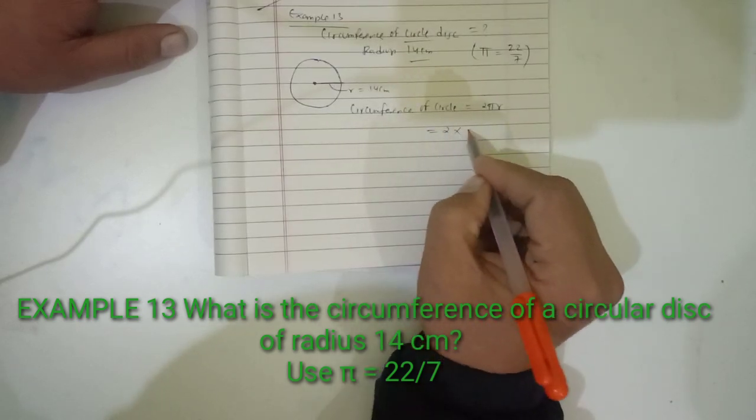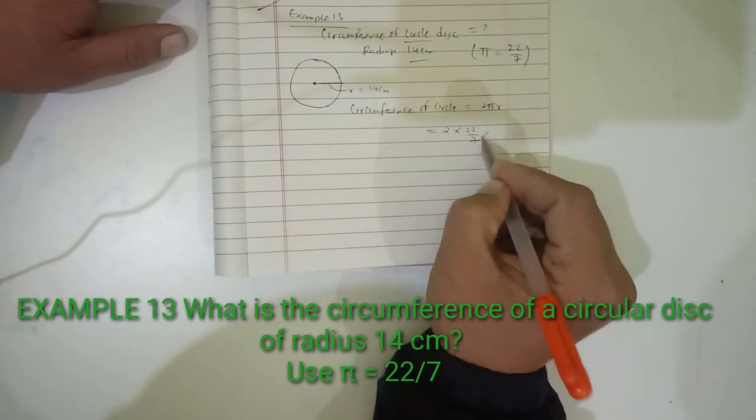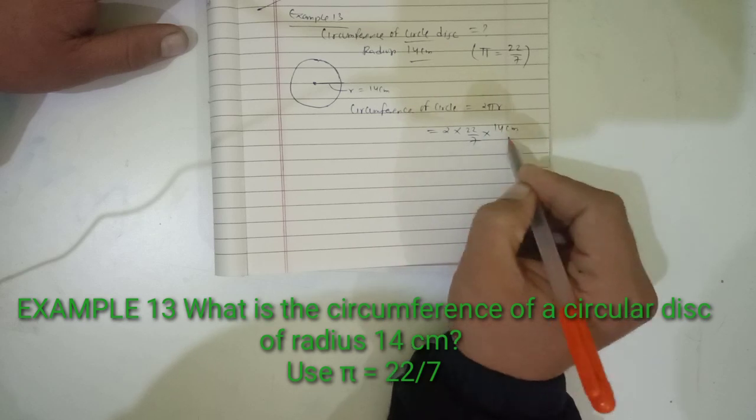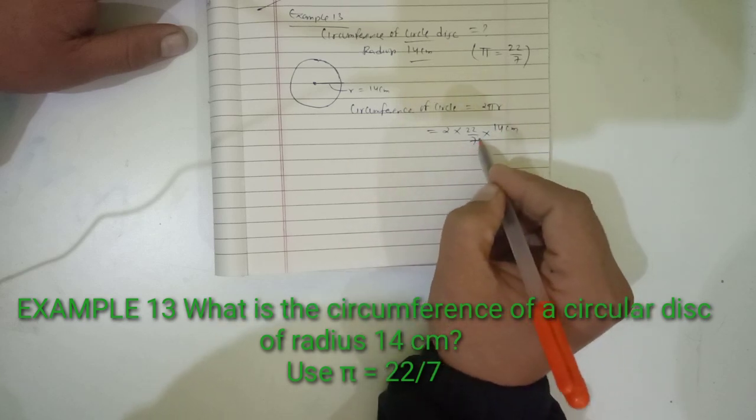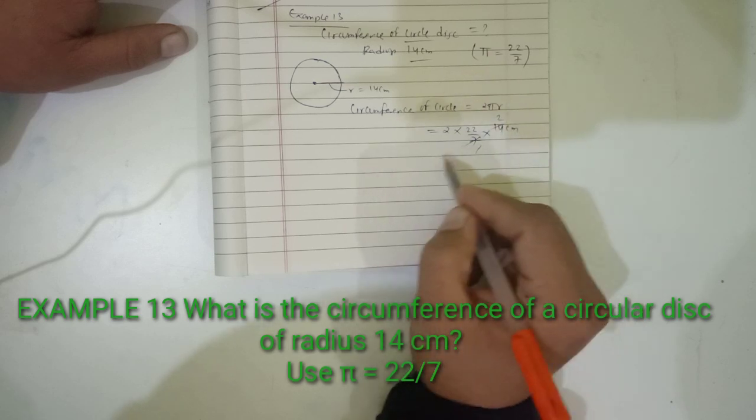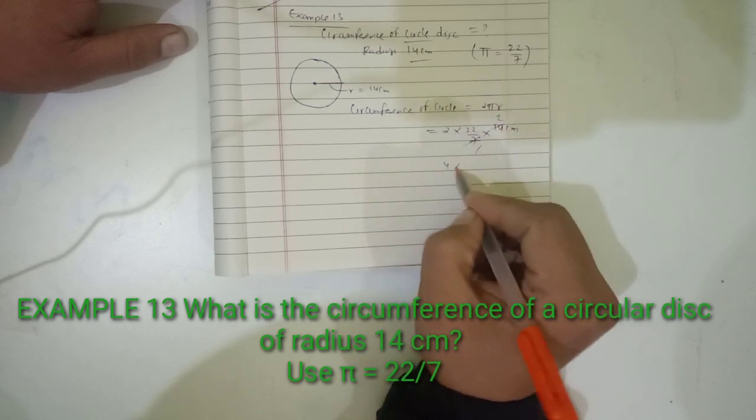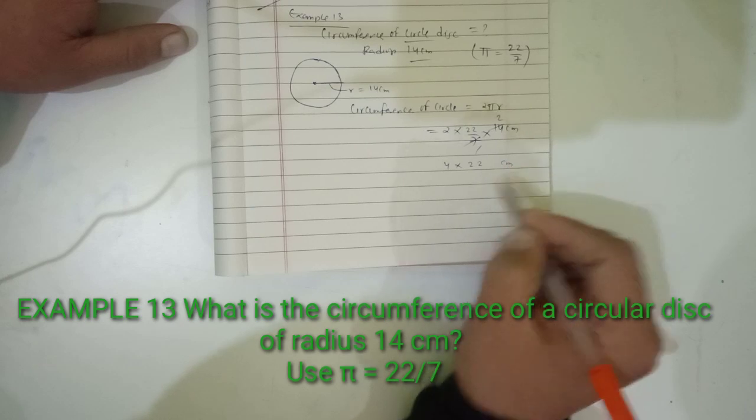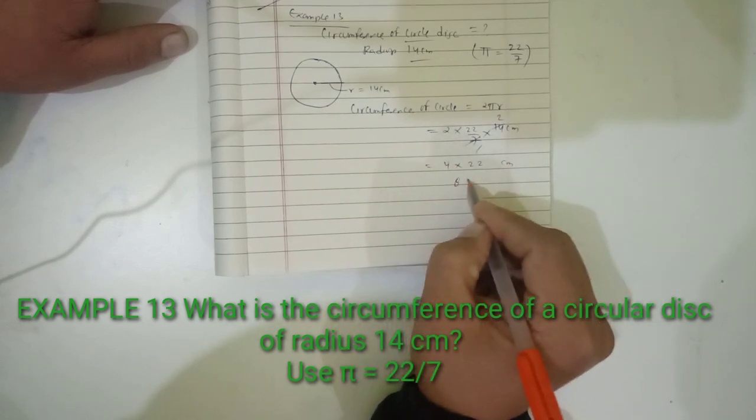Multiply 2 with π as 22/7 and r as 14 centimeters. So do the multiplication: 14 divided by 7 is 2, then 2 times 2 is 4, then 4 times 22 equals 88 centimeters.